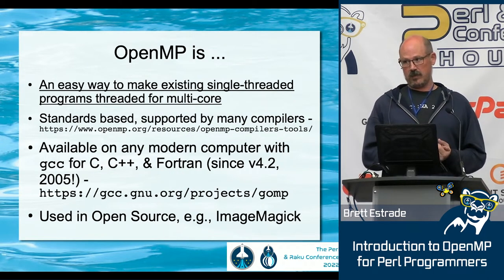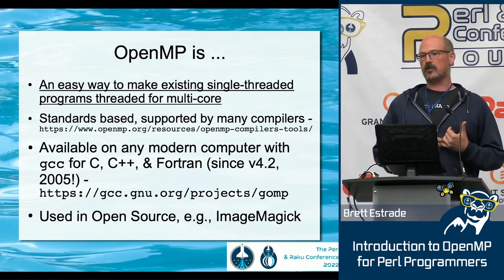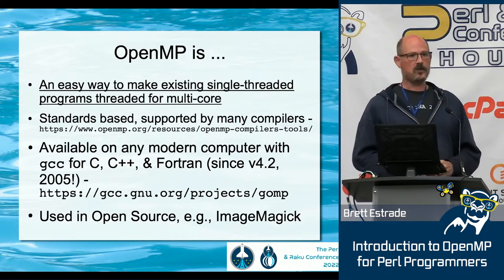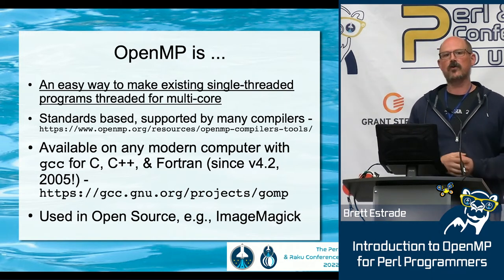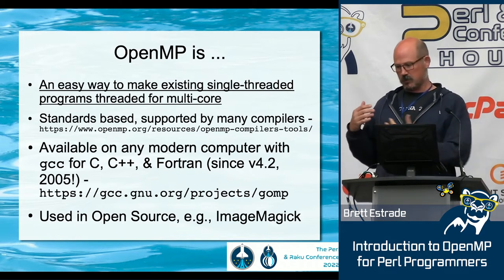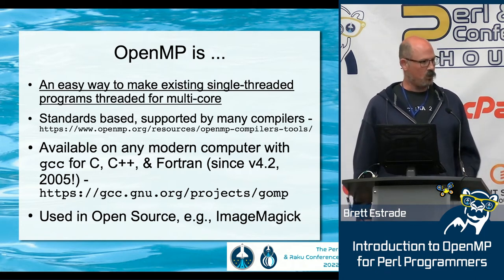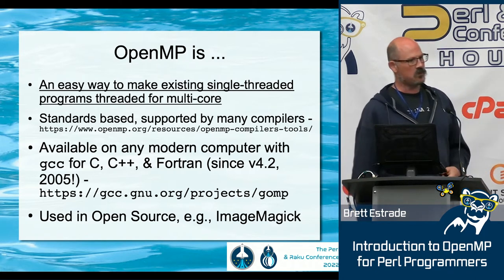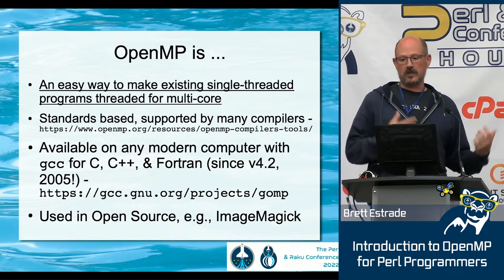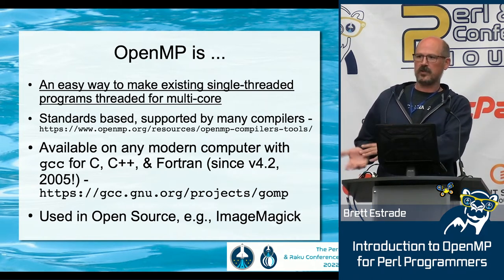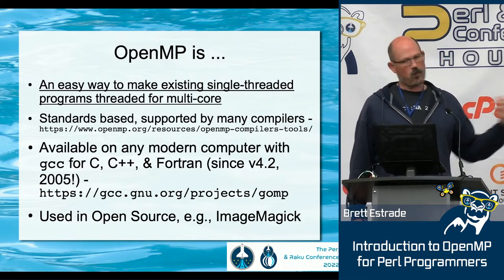OpenMP was originally designed to be an easy way to take a single-threaded program and get it threaded for multi-core environments. It came out of high performance computing, intended for domain scientists writing Fortran code primarily — to take sequential code implementing algorithms doing matrix operations, weather simulations, ocean model simulations, or nuclear explosion simulations, and speed them up for shared memory multi-core environments. Now it's ubiquitous, and this is how we can take advantage of it.